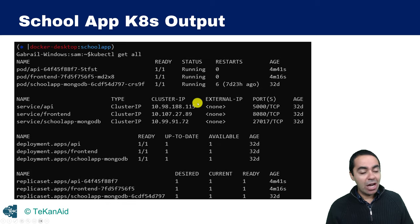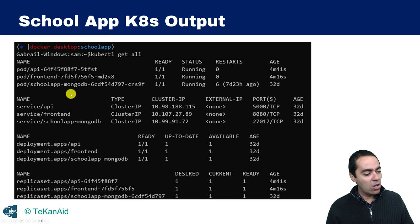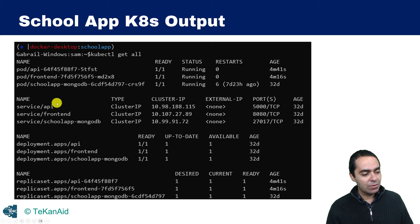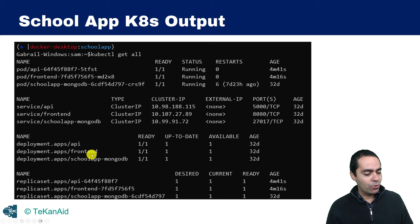The application output in Kubernetes will look something like this. When you run kubectl get all, you'll see three pods: an API pod, a frontend pod, and a MongoDB pod — all deployed as deployments. We have services for each one of those pods, using ClusterIP as the service type.